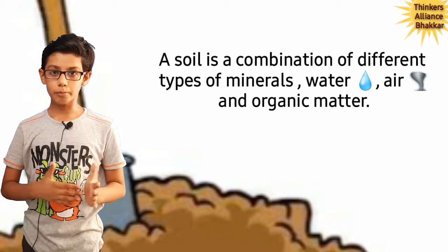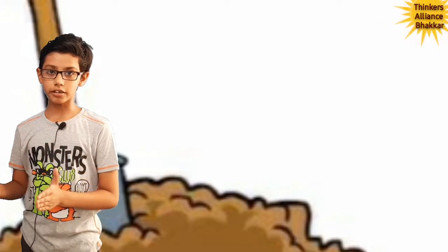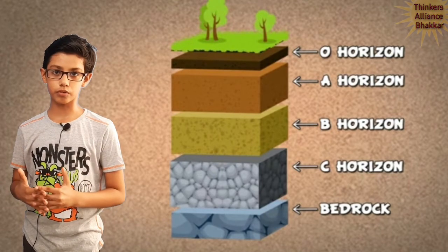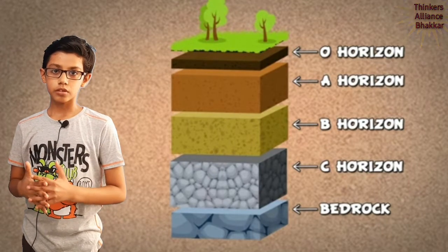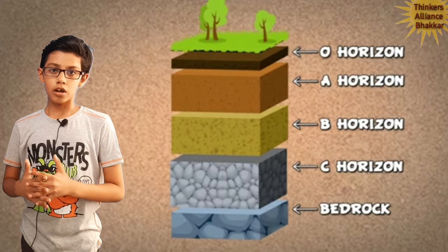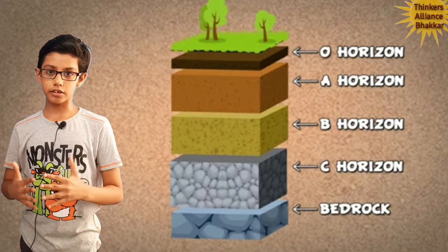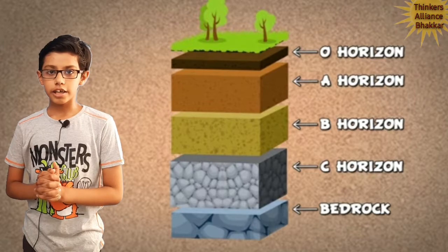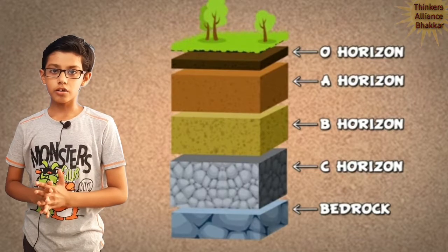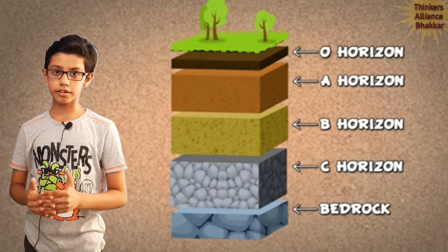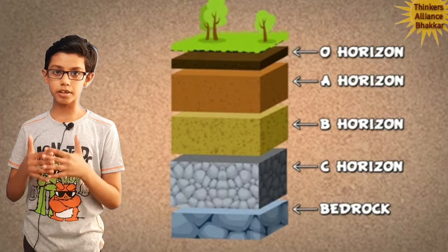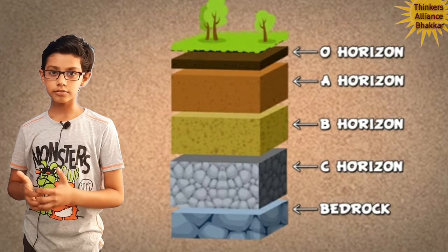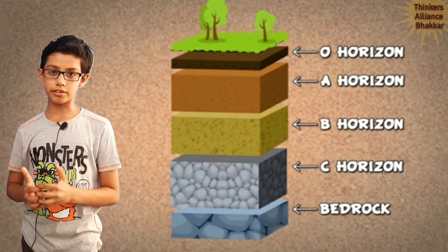Now come to the point — layers of soil. There are five layers of soil known as horizons. Their names are O horizon, A horizon, B horizon, C horizon and R horizon.